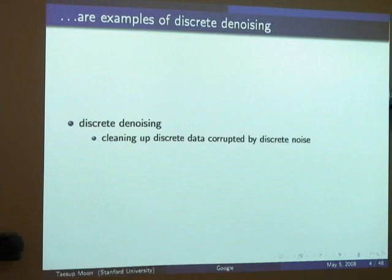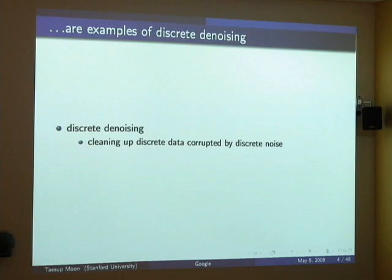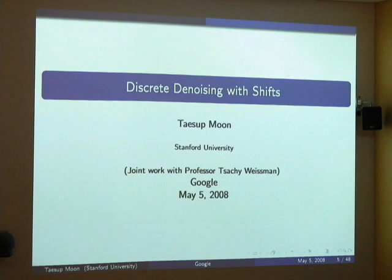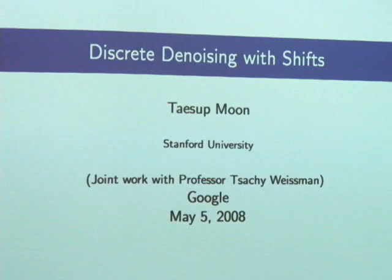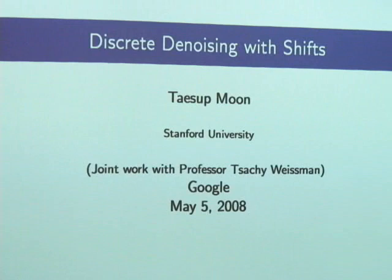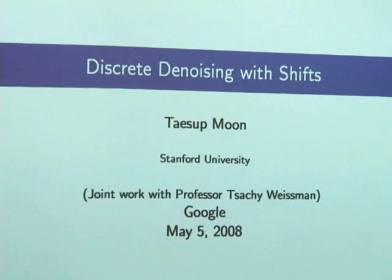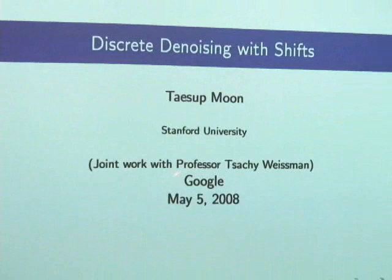This problem has been one of the central interests of many statisticians, computer scientists, and information theorists. My name is Taesun Moon, and I'm from Stanford University. Today I'm going to introduce a new take on the discrete denoising problem and present a scheme that works universally well on any kind of discrete denoising problem, and which becomes even more powerful when the source or signal is time-varying or space-varying. This is joint work with my advisor, Professor Zaki Wiseman at Stanford.